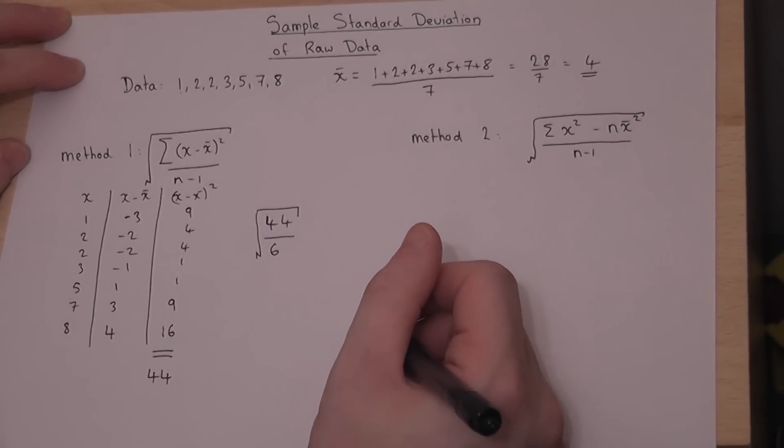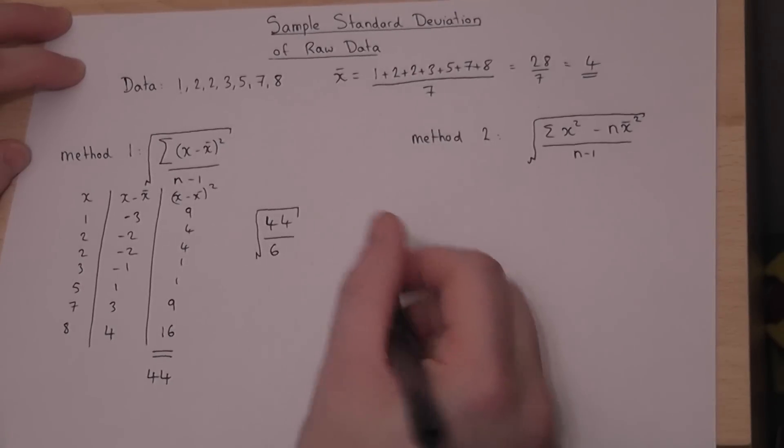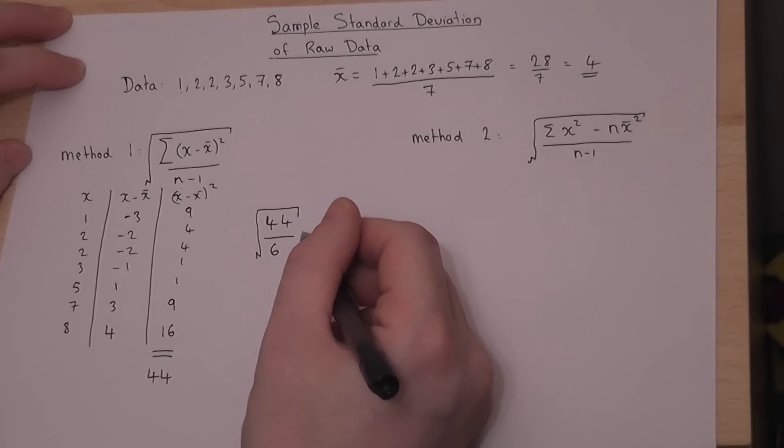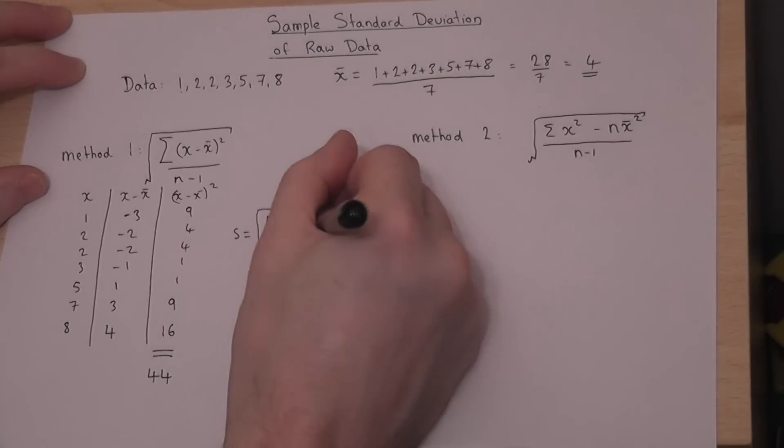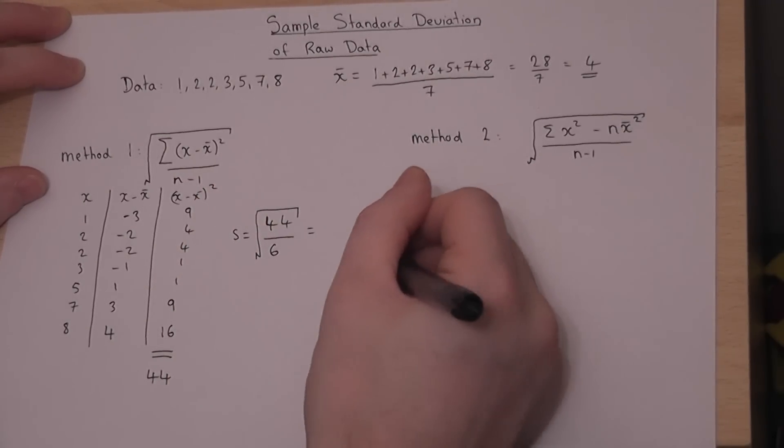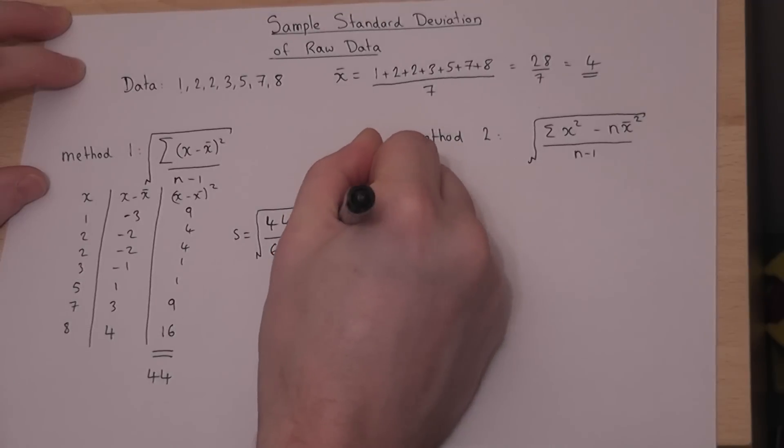If we don't square root, it's called the sample variance. However, if we square root, it's called the sample standard deviation, given by the letter S. And then, this just works out to be 2.7 to 1 decimal place.